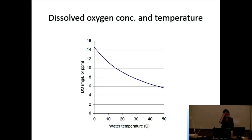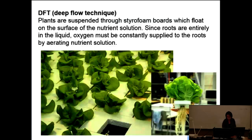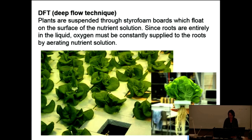Roots need oxygen, and in water it may not be the best condition for oxygen supply. Plants can grow if dissolved oxygen is above about 3 to 4 parts per million — you don't want to go below that threshold in DFT. Roots are entirely in the liquid, so oxygen must be constantly supplied. An air bubbling aeration system is the typical approach.